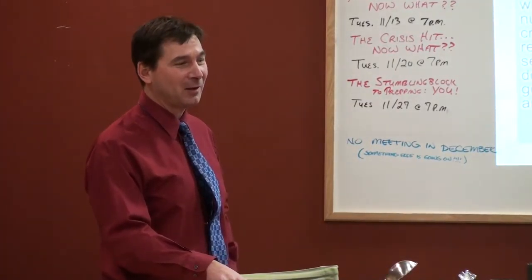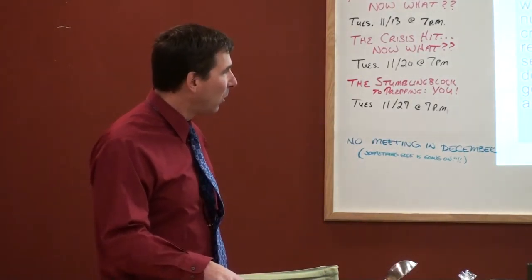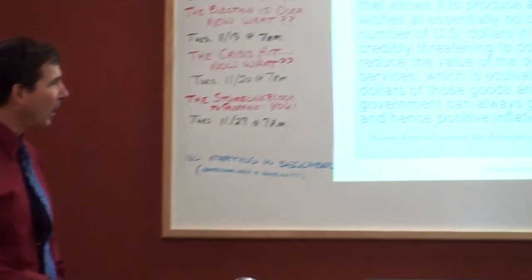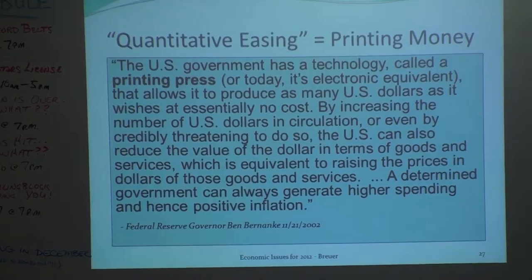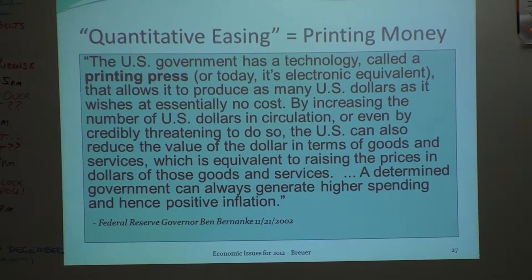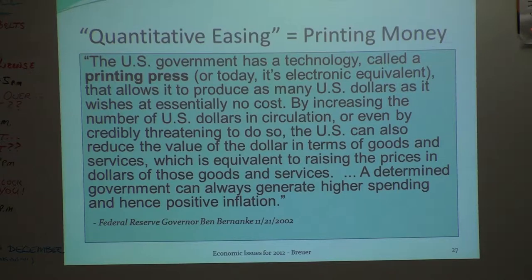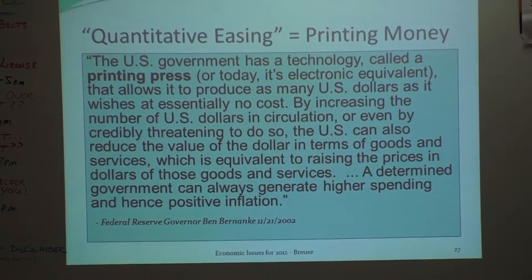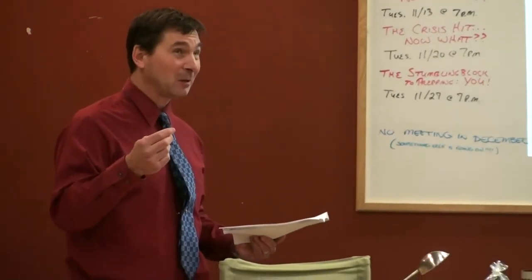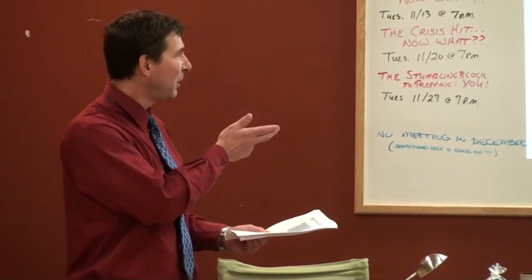This isn't just my opinion that quantitative easing is printing money. Here's a direct quote from Ben Bernanke: 'The US government has a technology called a printing press that allows it to produce as many US dollars as it wishes at essentially no cost. By increasing the number of US dollars in circulation, the US can also reduce the value of the dollar in terms of goods and services, which is equivalent to raising prices of those goods and services. A determined government can always generate higher spending and hence positive inflation.'